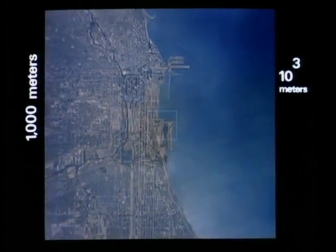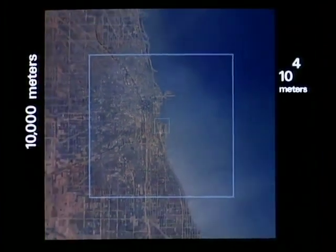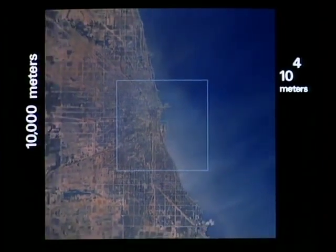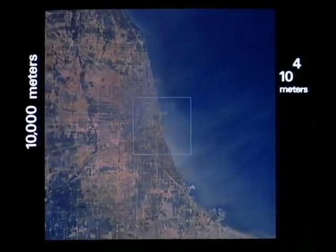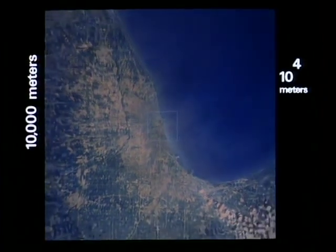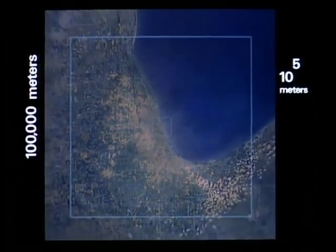10 to the 4th meters, 10 kilometers, the distance a supersonic airplane can travel in 10 seconds. We see first the rounded end of Lake Michigan, then the whole great lake. 10 to the 5th meters, the distance an orbiting satellite covers in 10 seconds. Long parades of clouds, the day's weather in the Middle West.